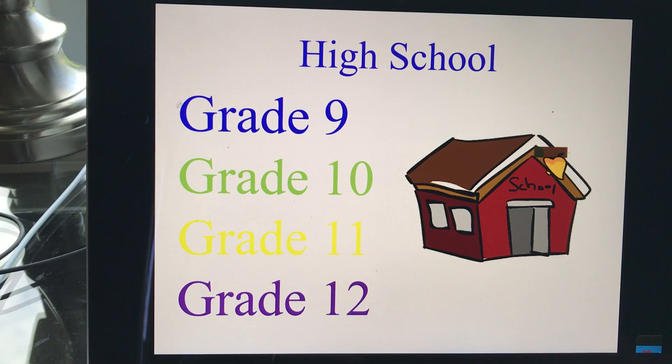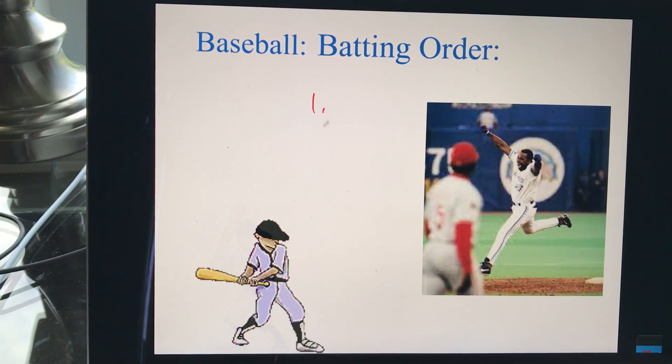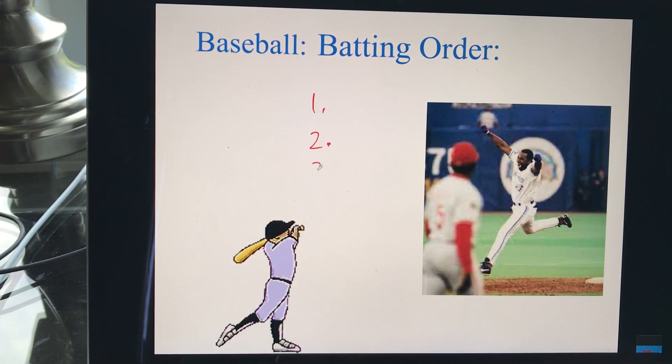High school is ordered. When you come, we do grade 9, and then we do grade 10, grade 11, and grade 12. We have an order of high school. In sports, there's a batting order. The person who bats first is a different person who bats second and third. It's usually the same each spot.